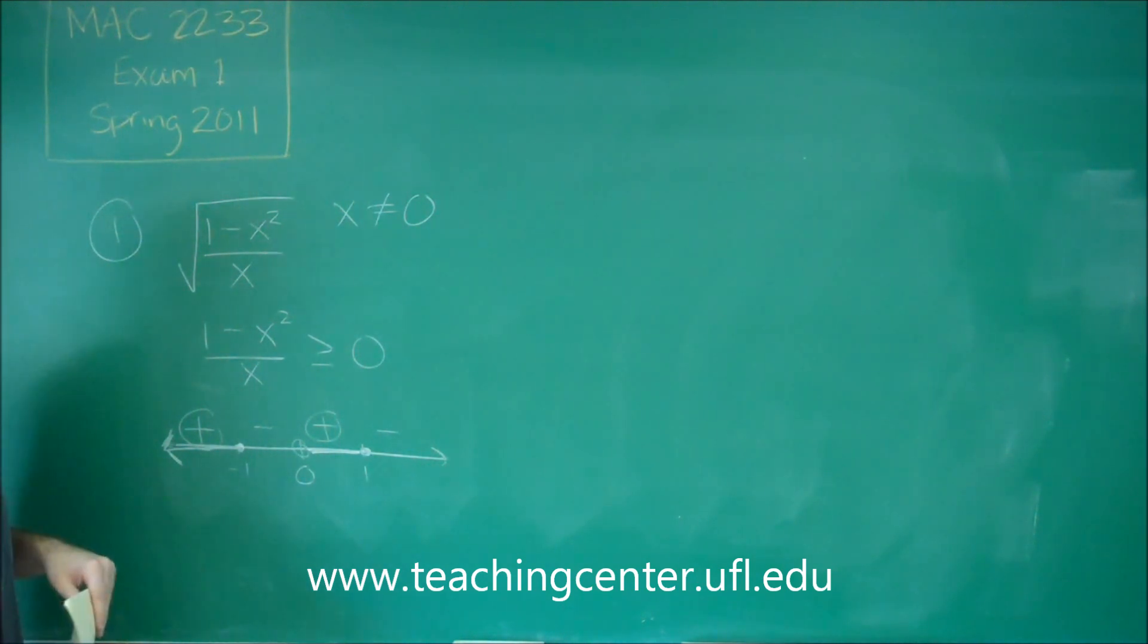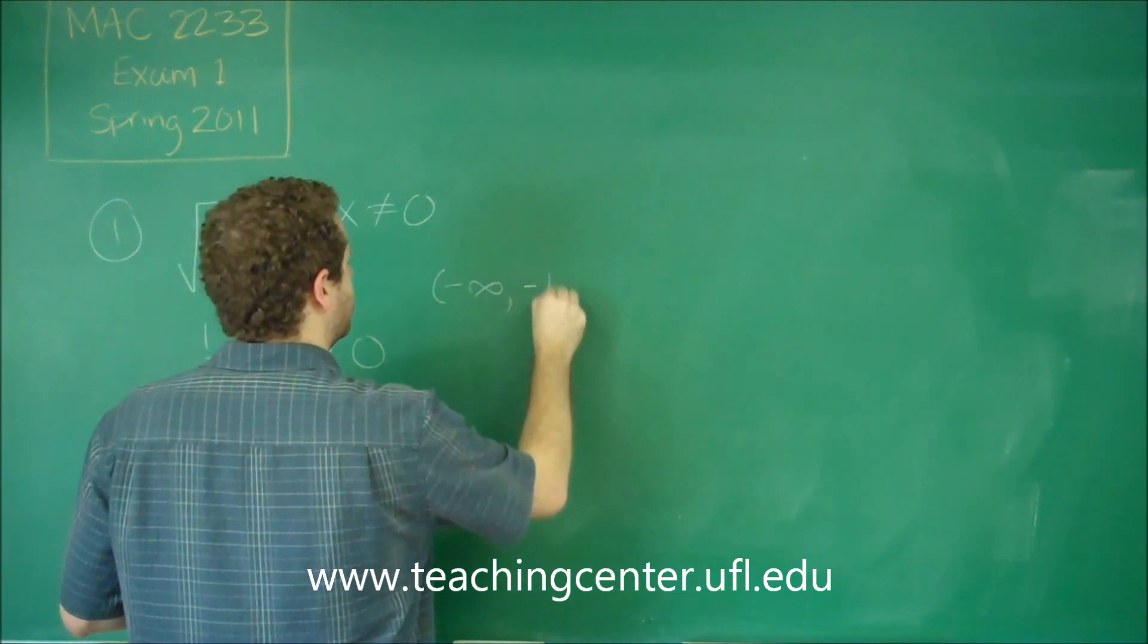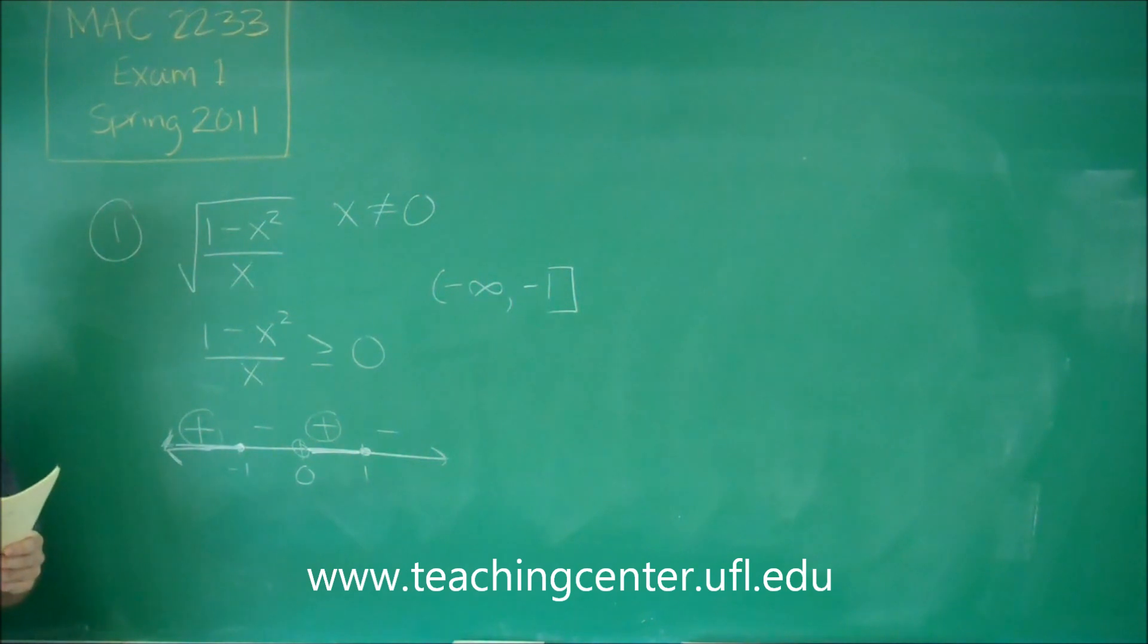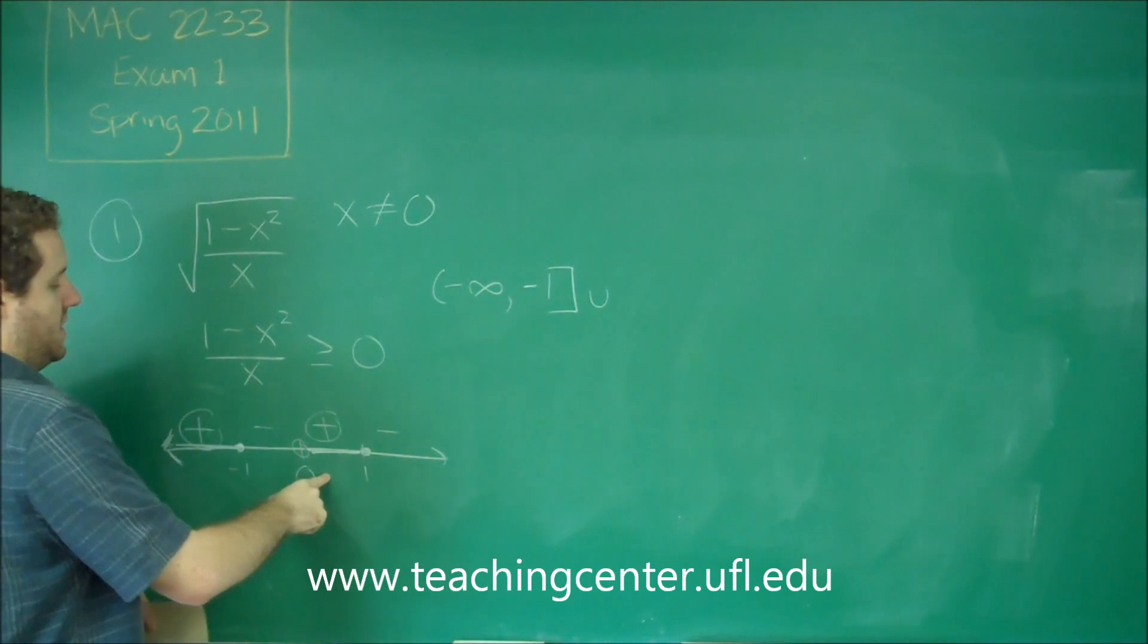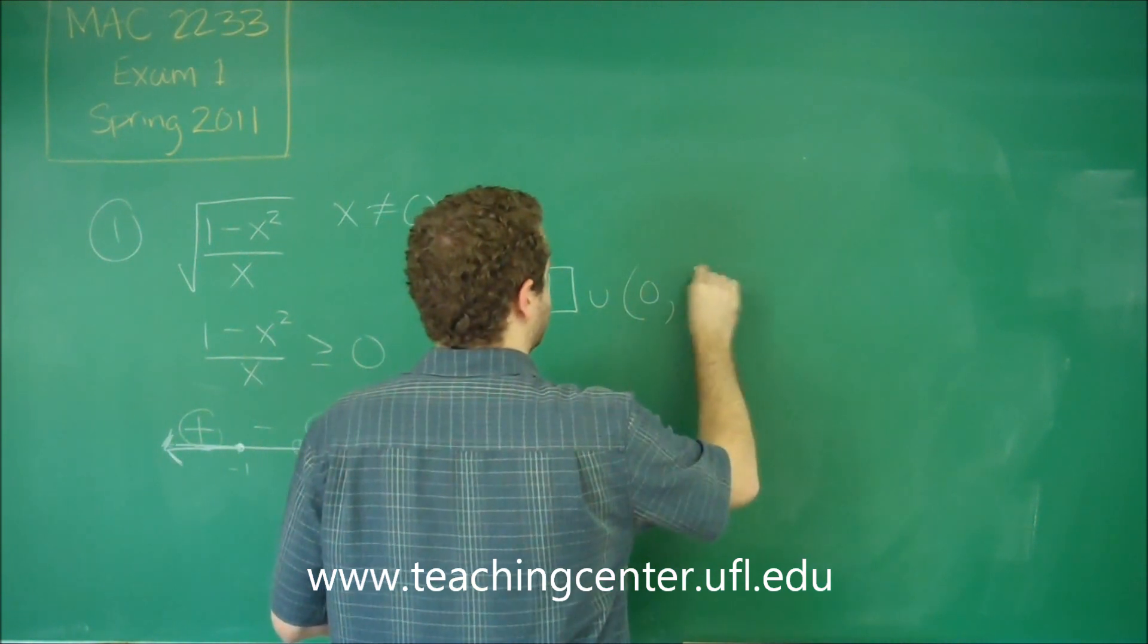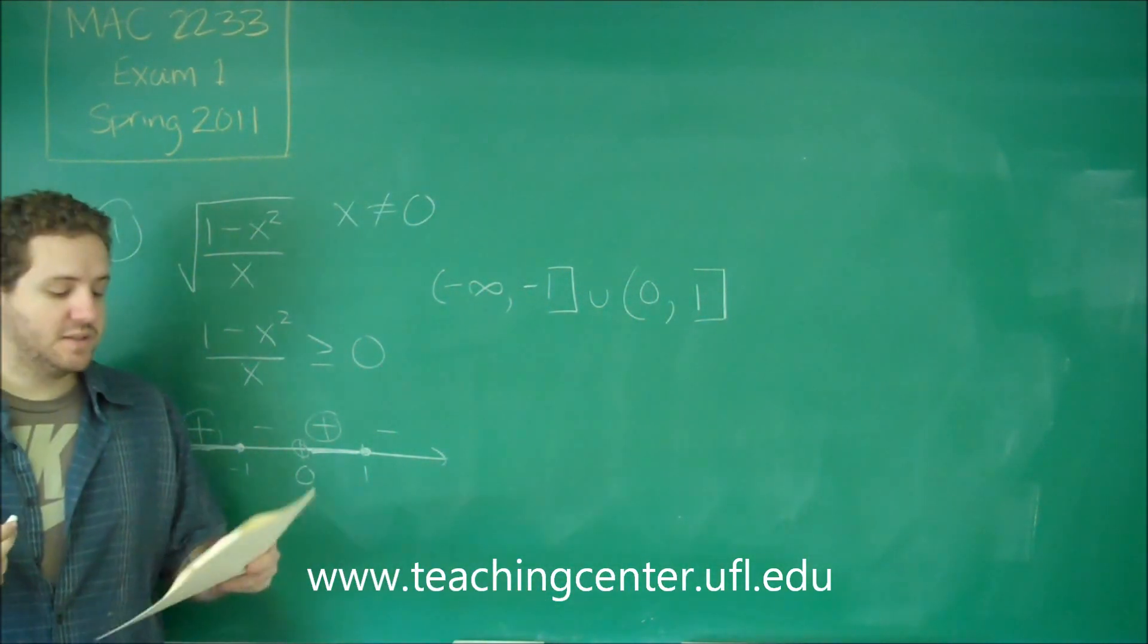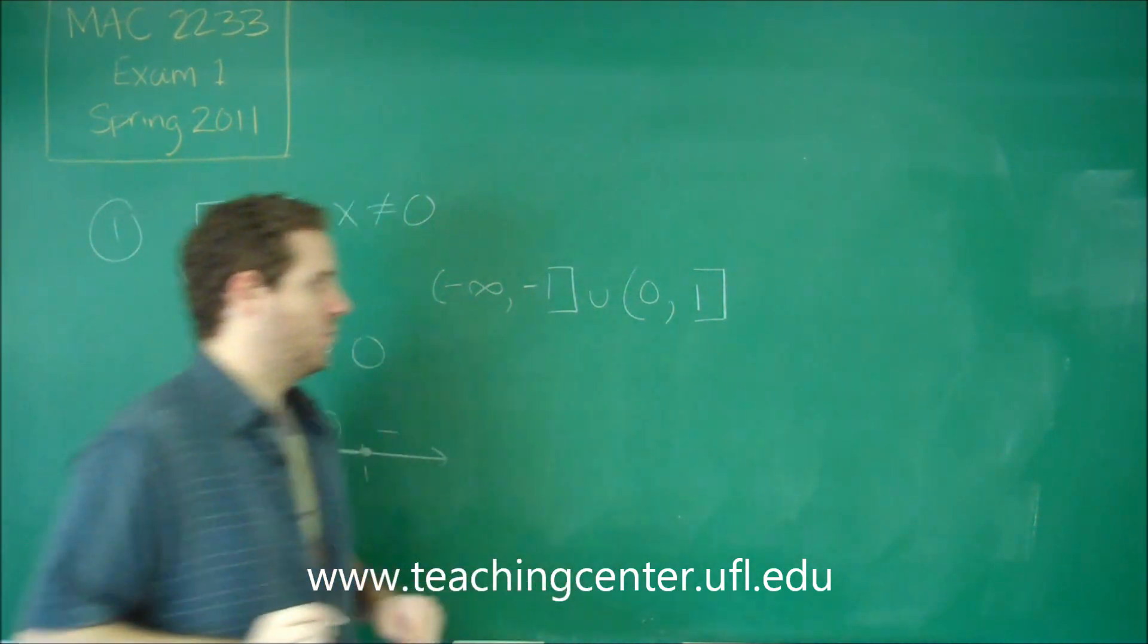So let's think about what this means in interval notation. We have everything from negative infinity up to and including negative 1, so you put a bracket on that negative 1. And then, union this little section here. So we have from 0 not including 0, up to and including 1. So make sure you have your brackets and parentheses correct. That, of course, then leads you to answer choice D with that answer there.